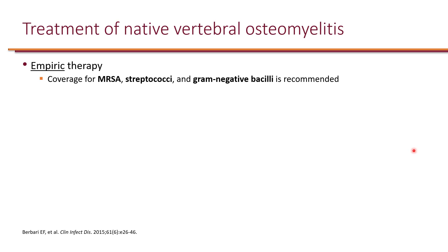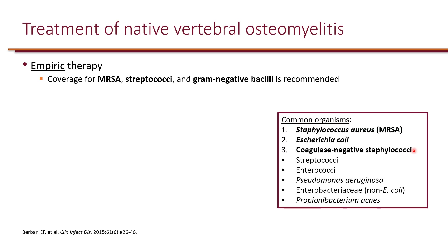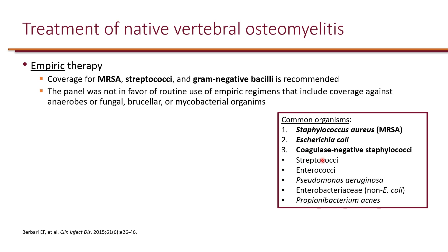How do we initiate empiric therapy for native vertebral osteomyelitis? It is recommended to cover MRSA, streptococci, and gram-negative bacilli. Common organisms are MRSA, E. coli, coagulase-negative staph, and streptococci species. The IDSA panel specifically said they are not in favor of routine use of regimens that cover anaerobes or fungal, brucellar, or mycobacterial organisms, because these pathogens are not as common.